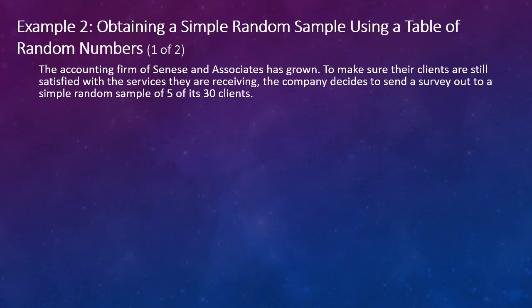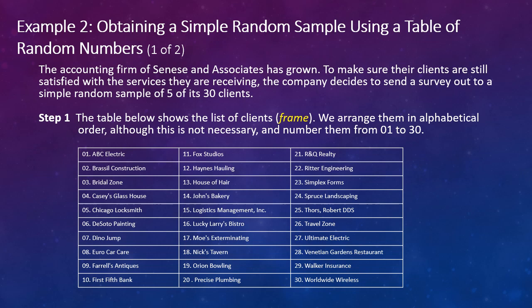So let's look at Example 2: how we might obtain a simple random sample if we used a table of random numbers. The accounting firm of Sinise and Associates has grown. To make sure their clients are still satisfied with the services they are receiving, the company decides to send a survey out to a simple random sample of five of its 30 clients. So in order to select the 30 clients, first we need to create a frame or a list of all of the clients. Here they've arranged them in alphabetical order, although that's not necessary, and in fact you might want to not do it again for randomness to try to avoid any bias, but it doesn't really matter. And they've also numbered them from one to 30.